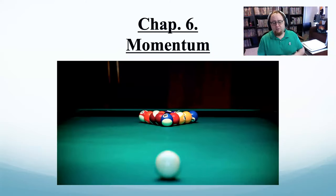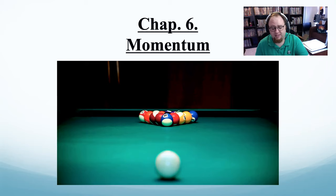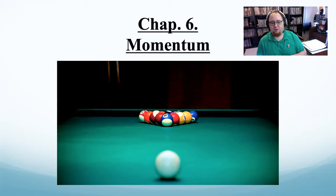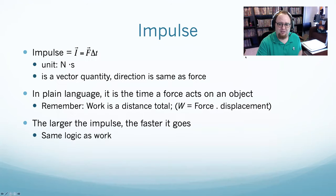Hello, welcome to another physics class. Today we're going to start chapter six, which is called momentum. Not going to lie, I think it's probably one of the simpler chapters, at least for doing problems, although the concepts can get a little complicated at times. Basically, we're going to talk about collisions — what happens when things ram into each other? Just like last chapter was called energy and we started with work, this chapter about momentum we're going to talk about something else to start.